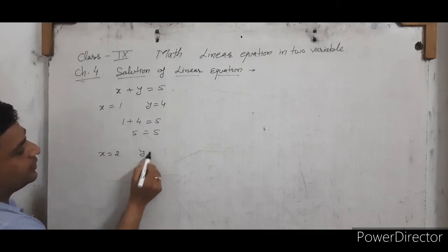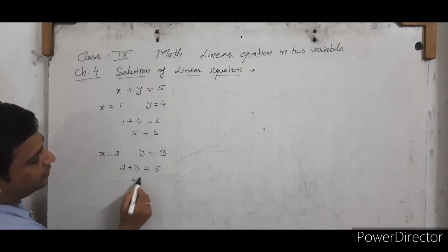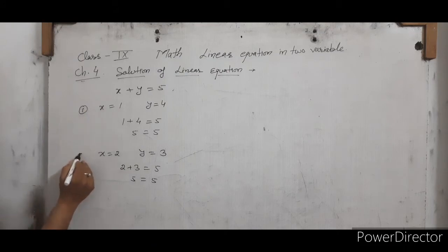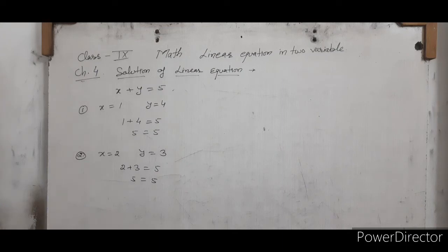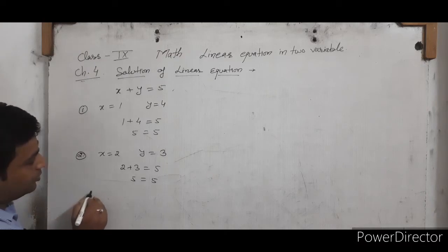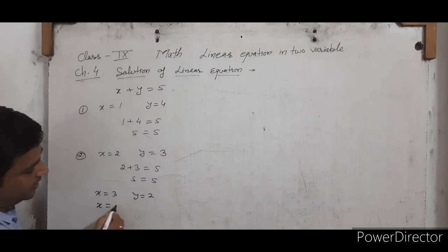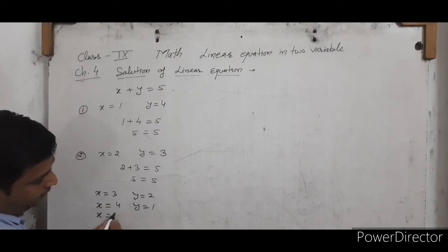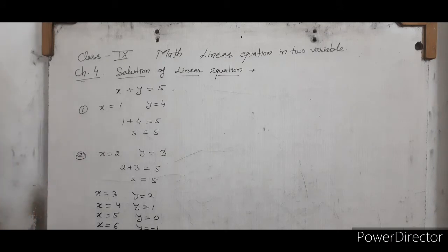Similarly, X equals to 2 and Y equals to 3 also satisfies the equation since 2 plus 3 equals to 5. Further, X equals to 3 and Y equals to 2; X equals to 4 and Y equals to 1; X equals to 5 and Y equals to 0; X equals to 6 and Y equals to minus 1 — all are solutions. So, if there is one linear equation in 2 variables, there are infinitely many solutions.